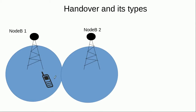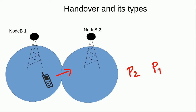For example, there is a mobile which is connected to Node B number 1, or it is in communication with the base station Node B number 1. But this mobile is moving towards Node B number 2. In that case, the power it is receiving from Node B number 2 is P2, and the power it is receiving from Node B number 1 is P1.